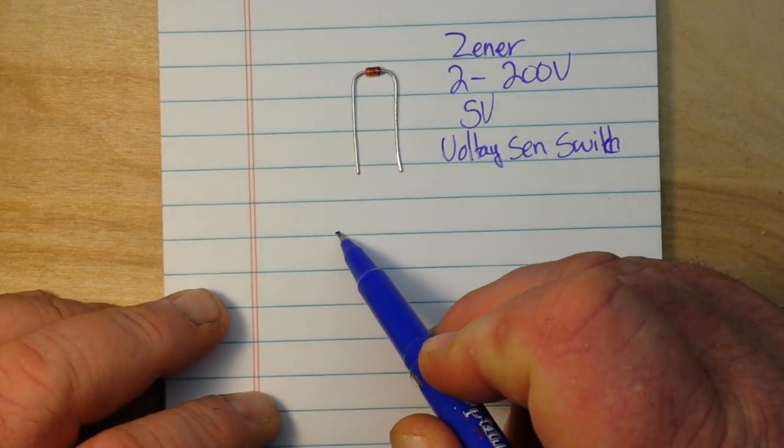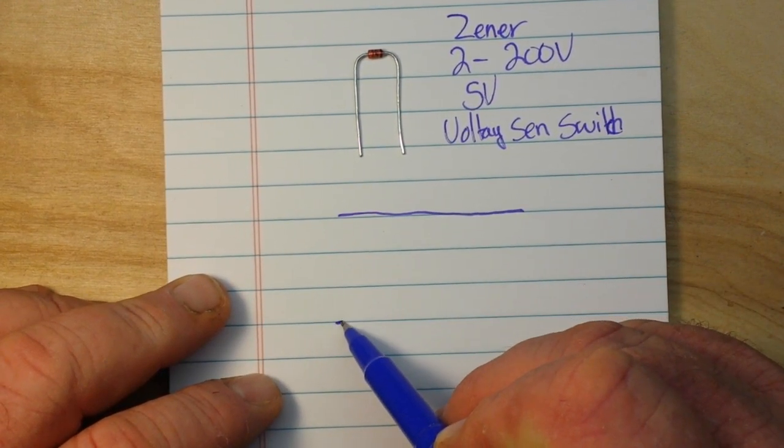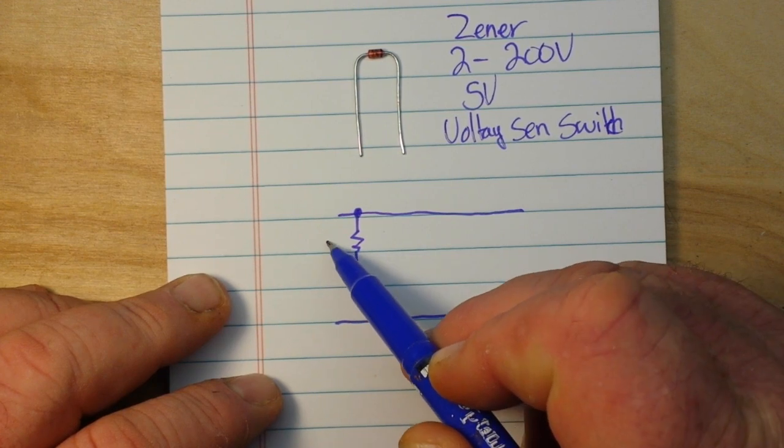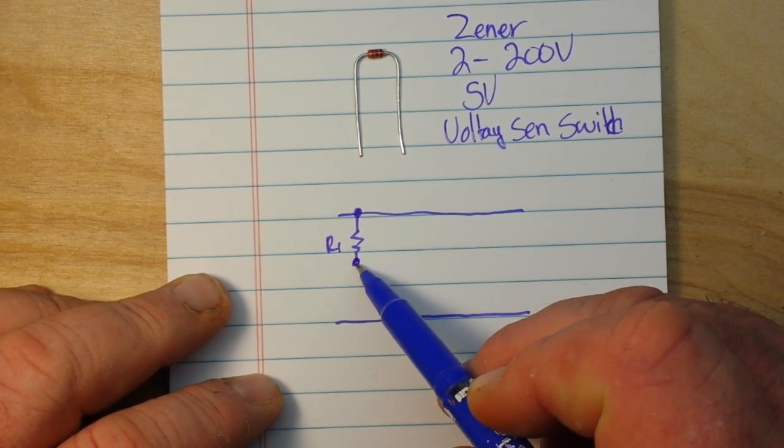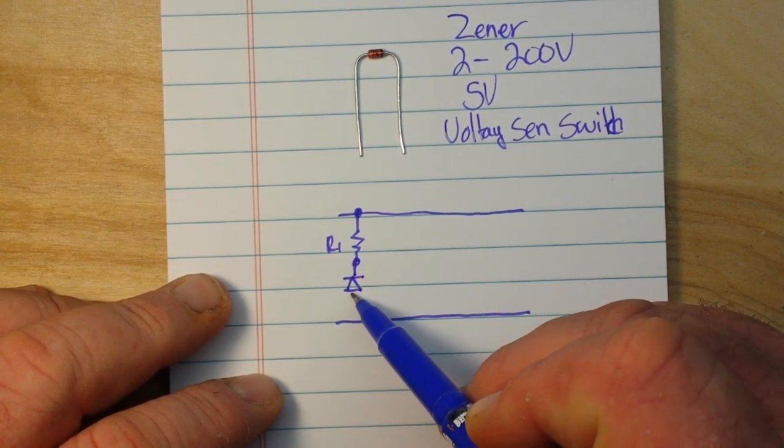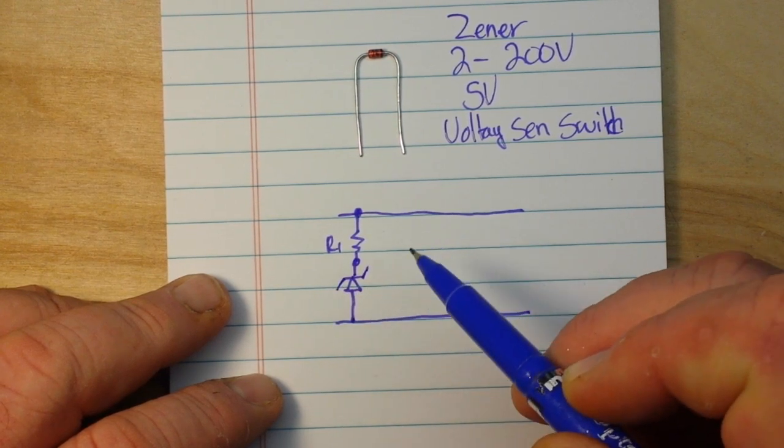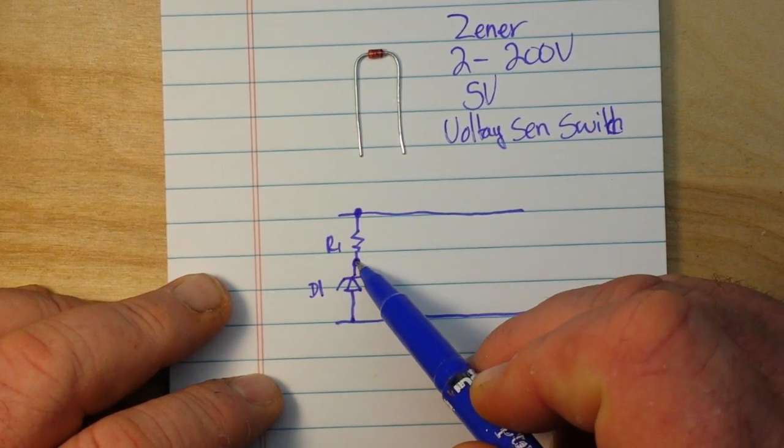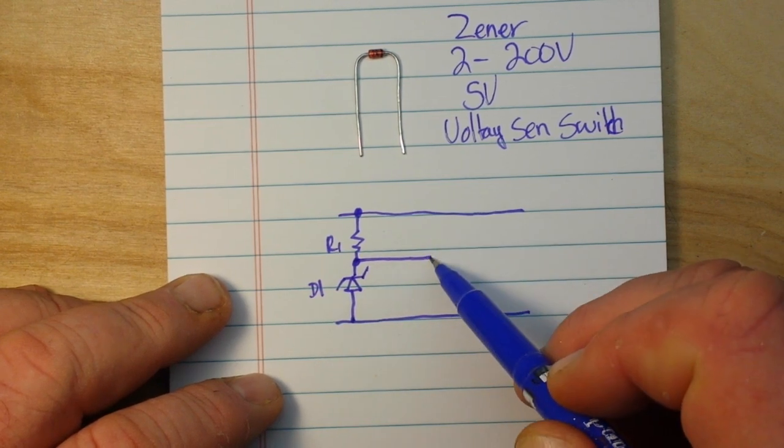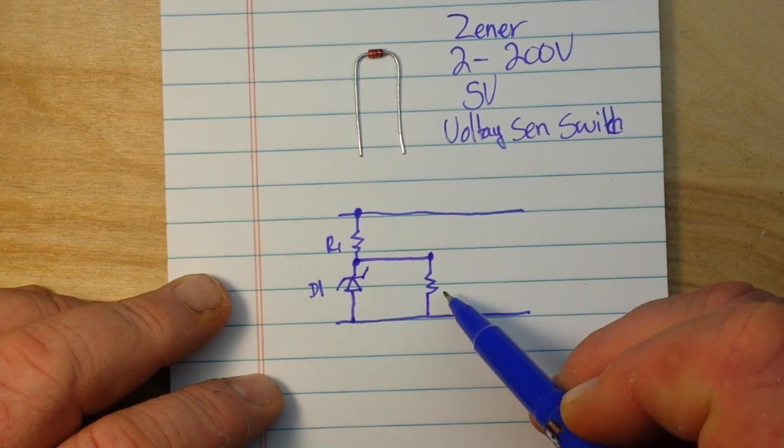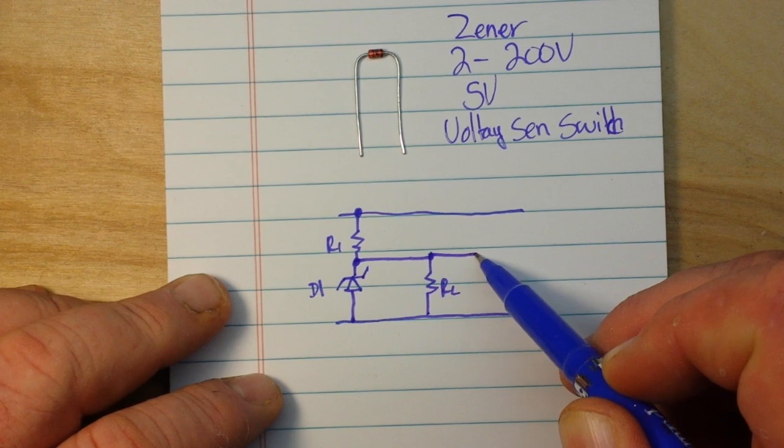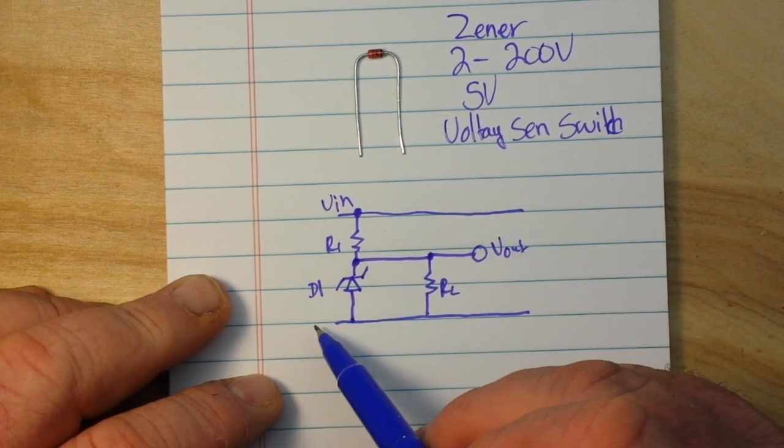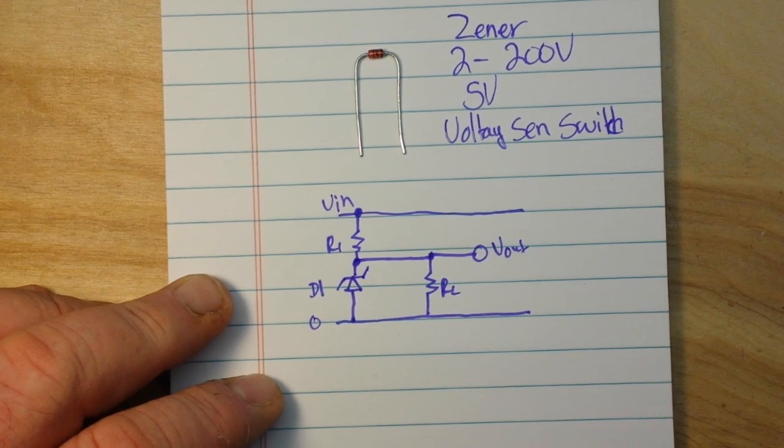So if this is our positive rail and this is our negative rail, and we'll call this R1, and we'll call this guy our Zener diode - which the symbol looks just like a regular diode except it's got a little there and a little there - that's our Zener diode D1. And then from this little divider junction here we'll come over here and we'll put another resistor in, we'll call that RL our load resistor, and we'll get our Vout right there. So we have Vin, zero volts, and Vout, and that will make a simple voltage regulator.